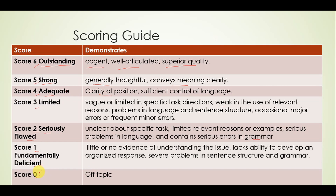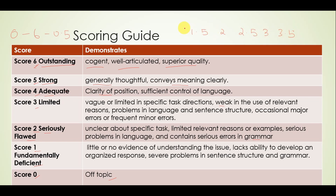A score of 0 means your response was off topic. Your score will vary between 0 and 6 with an increment value of 0.5, meaning your score might be 0.5, 1, 1.5, 2, 2.5, 3, 3.5, and so on.